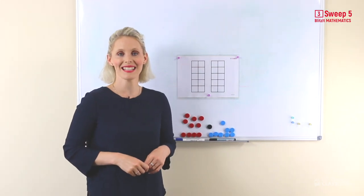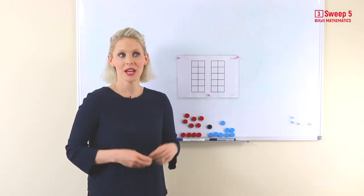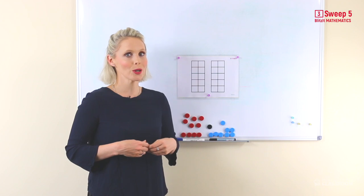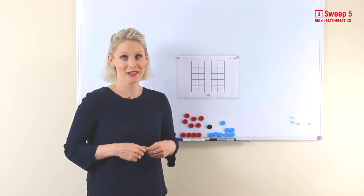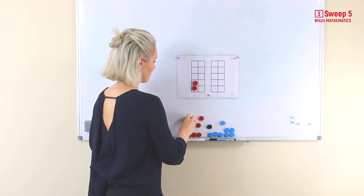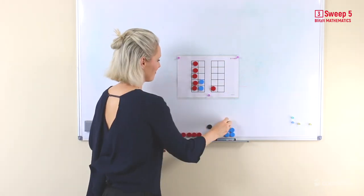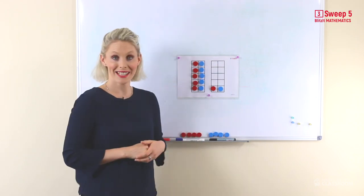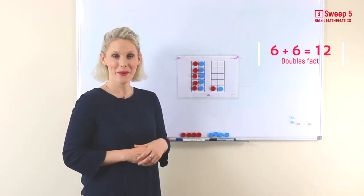Now let's look at six add seven. Which number do we need to double? That's right, the smaller number, so we need to double six. What's the answer? Twelve. Double six is twelve.